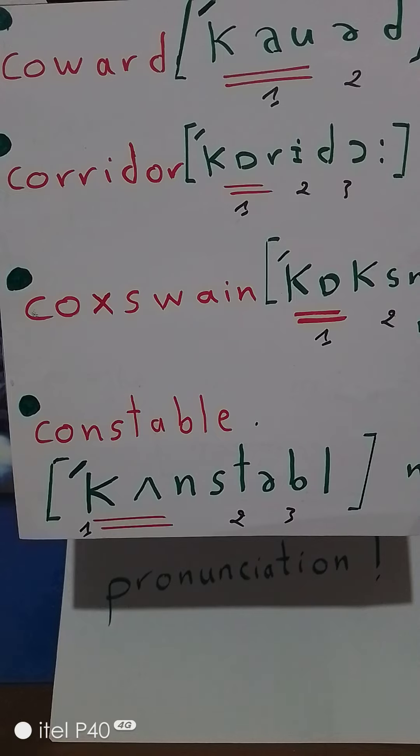A corridor is a kind of long passage. Corridor has three syllables with stress on the first syllable. Corridor. Coward, corridor. The third word is coxswain.